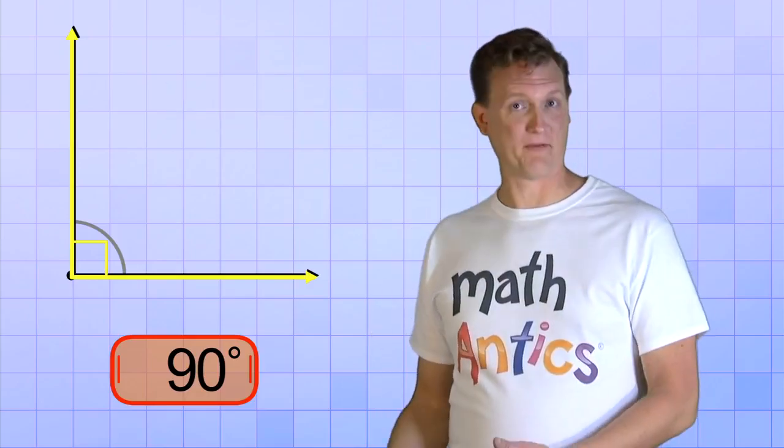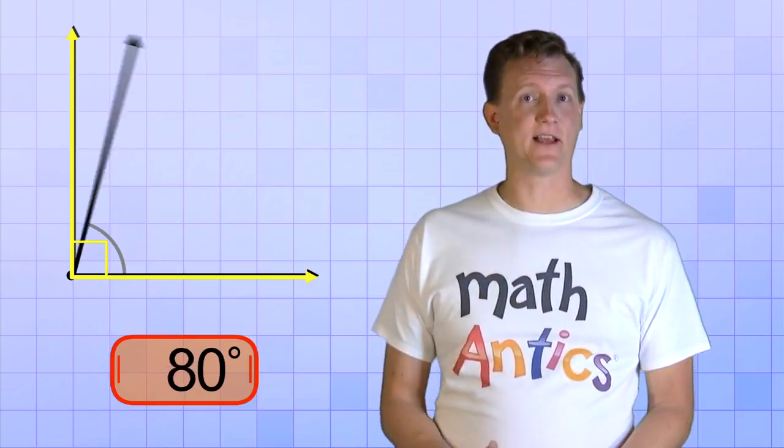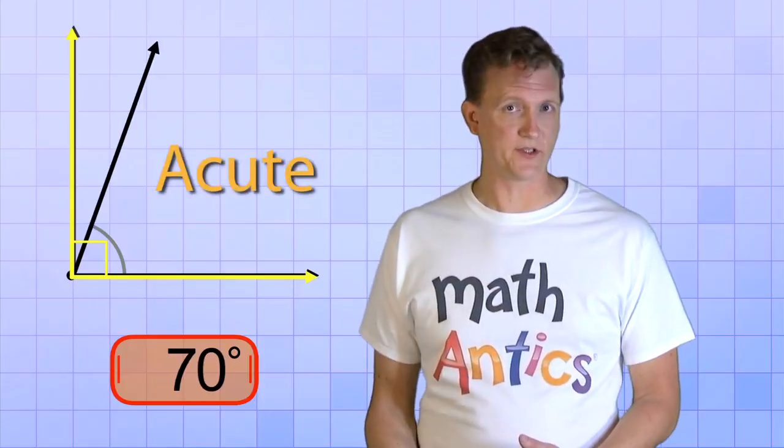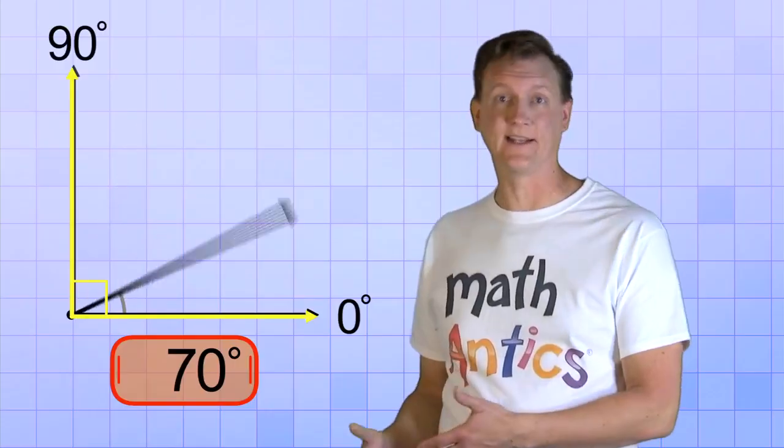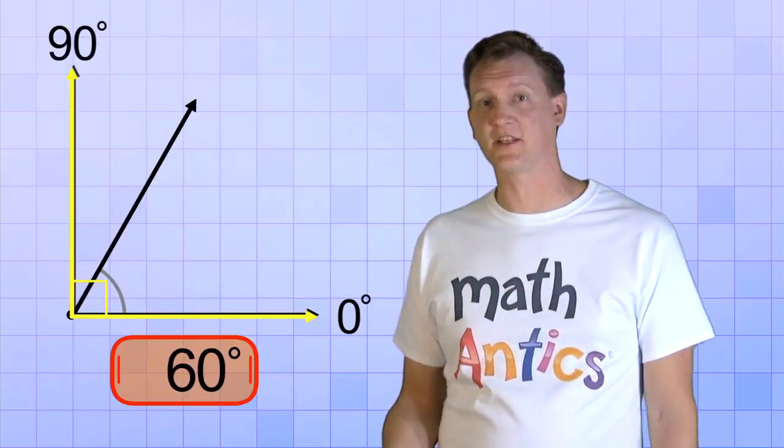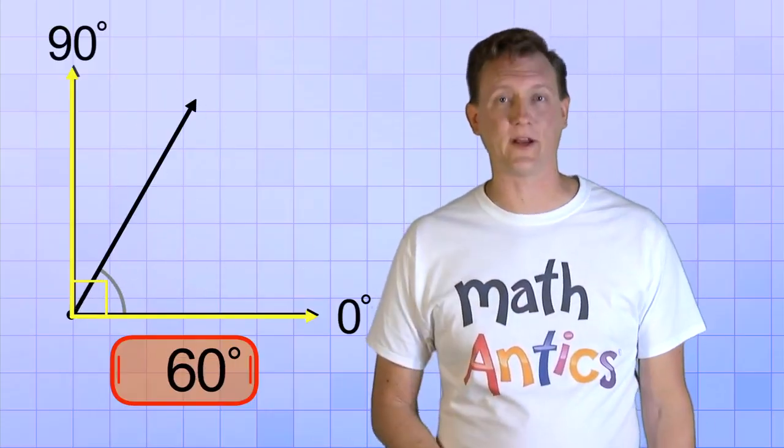Okay, do you remember from our last video that all angles less than a right angle are called acute angles? So that means that all the angles we've seen so far, that are between 0 and 90 degrees, like 10, 30, 45, 60, and so on, are acute angles.